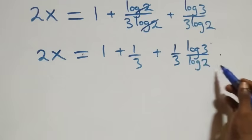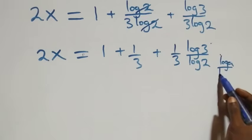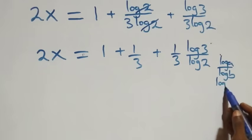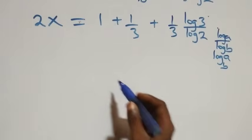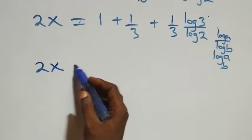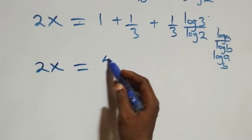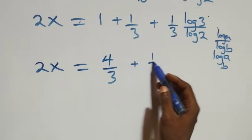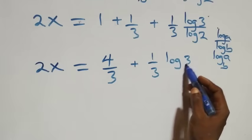Applying the change of base rule — log a over log b equals log a to base b — we have 2x equals 1 plus 1/3, which is 4/3, plus (1/3)·log 3 to base 2.